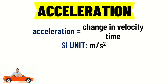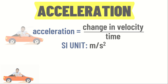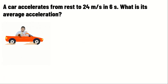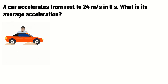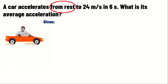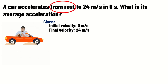Let us try to solve this problem. A car accelerates from rest to 24 m per second in 6 seconds. What is its average acceleration? To solve this, let us write all the given data. First is the initial velocity. Since the car accelerated from rest, the initial velocity is 0 m per second. The final velocity is 24 m per second, and the time is 6 seconds.